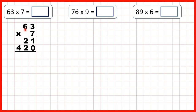Because remember, the 6 in 63 stands for 6 tens, so 60. And 60 times 7 is 420. So now we can add up our answer lines. 1 plus 0 is 1, 2 plus 2 is 4, and nothing plus 4 is 4. So our answer is 441.